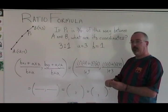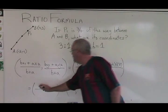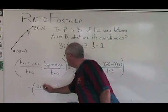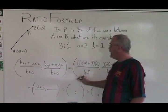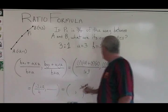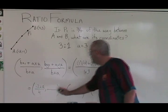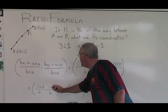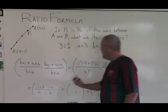Now we just have to simplify this. One times negative two is negative two, plus three times four is twelve. The bottom one plus three is four. On this side, one plus three of course is still four. One times negative one is negative one, plus three times three is nine.